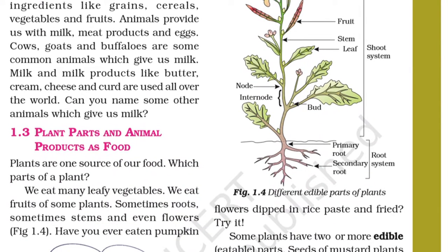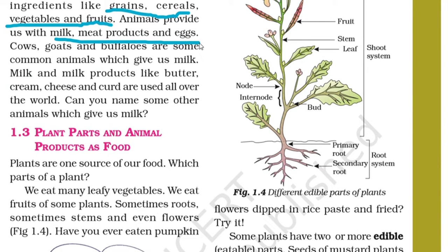What do we conclude from Activity 3? Plants are the sources of food ingredients like grains, cereals, vegetables, and fruits — these are plant products. Animals provide us with milk, meat products, and eggs — these are animal products.